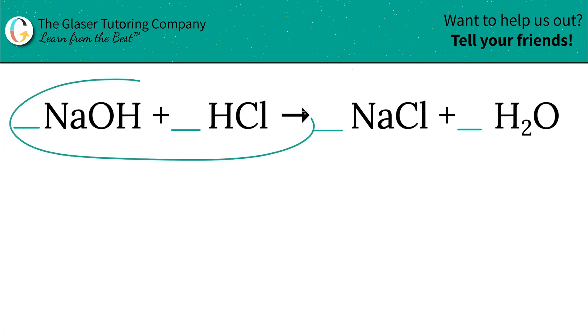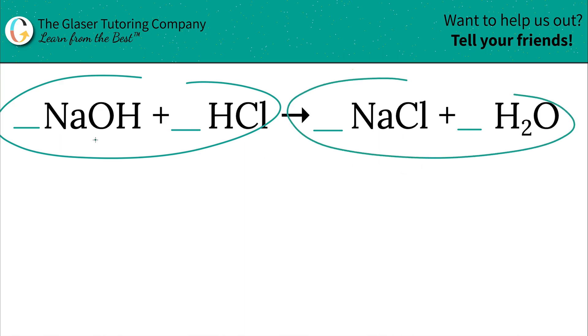Now I want to keep in mind the general principle that whatever's on the left-hand side, and left is just defined as the relative position to that yield sign, whatever's on the left-hand side better equal whatever's on the right-hand side. In other words, however many elements you have here on the left better equal however many elements you have here on the right.